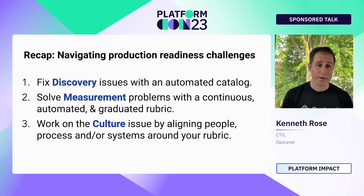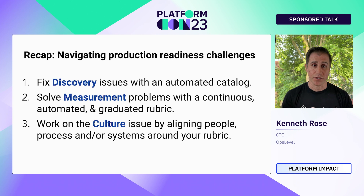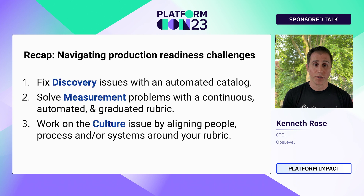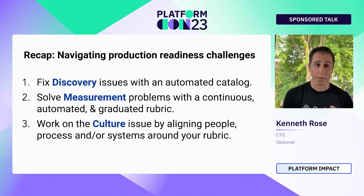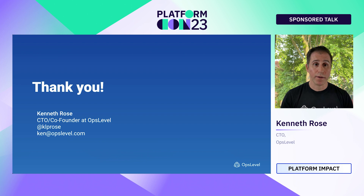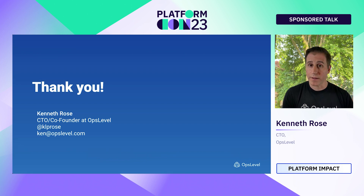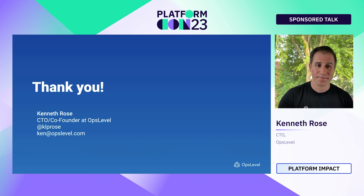We're nearing time, so as a recap: we talked about automating production readiness and how to solve the three sub-problems. We talked about solving the discovery problem with an automated catalog, solving the measurement problem with a continuous automated and graduated rubric, and solving the culture problem by aligning people, process, and systems around that rubric. I'm around on Slack if there are any questions, or feel free to hit me up on Twitter, LinkedIn, or by email. Thanks very much everybody — enjoy the rest of the conference.